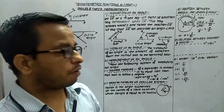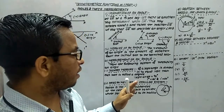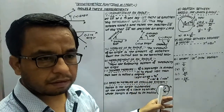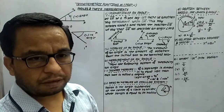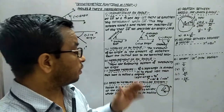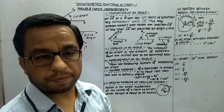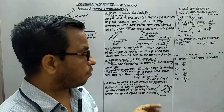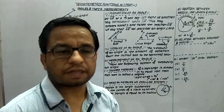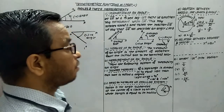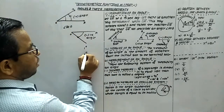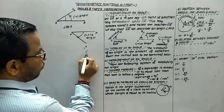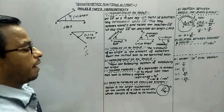You have to remember: one right angle is equal to 90 degrees. One degree is equal to 60 minutes, and one minute is equal to 60 seconds. This is the notation for minute, and this is the notation for second.